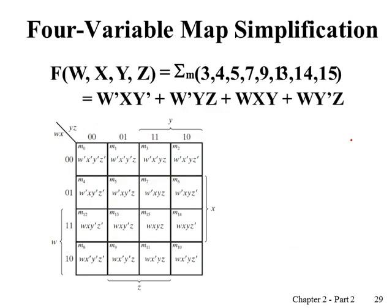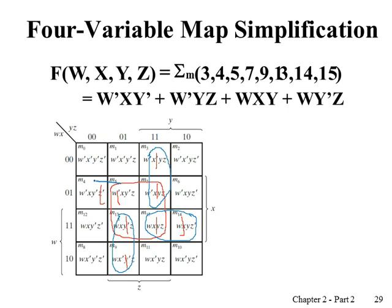Another example: first, construct the four-variable K-map with minterms zero through fifteen. This gives us the K-map for the given function F. We can see a group of four cells here. There are no more four-cell groups, so next we look for two-cell groups. We find several pairs of adjacent cells: one pair here, another adjacent pair, another two cells, and another two cells.